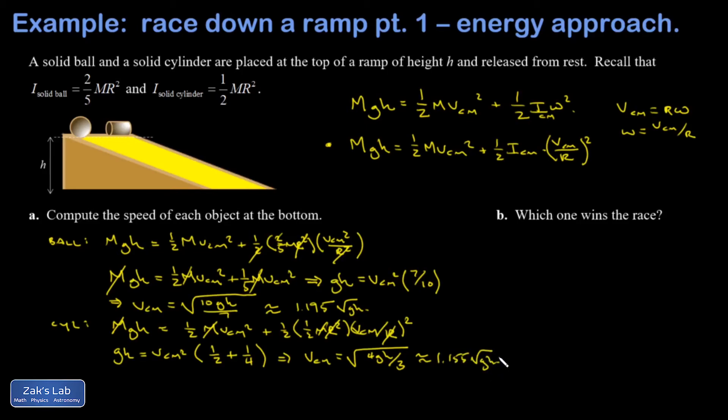Now I can tell which one's going faster at the end. The ball is 1.195 root GH, the cylinder is 1.155 root GH, and so the ball is going to be moving faster at the end.